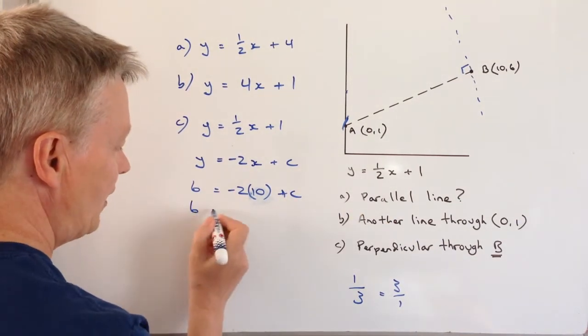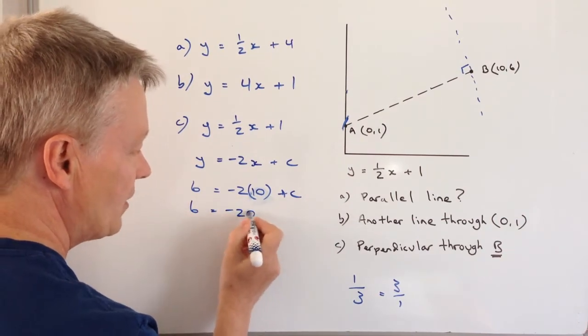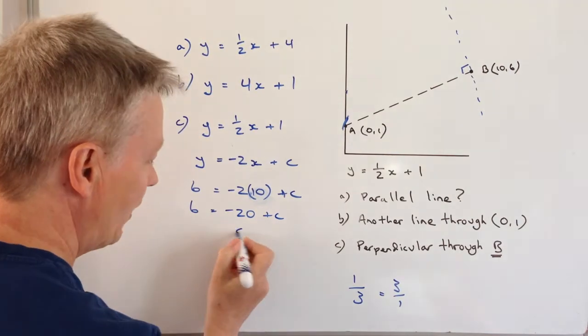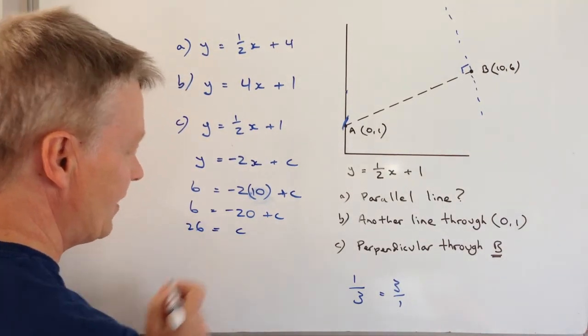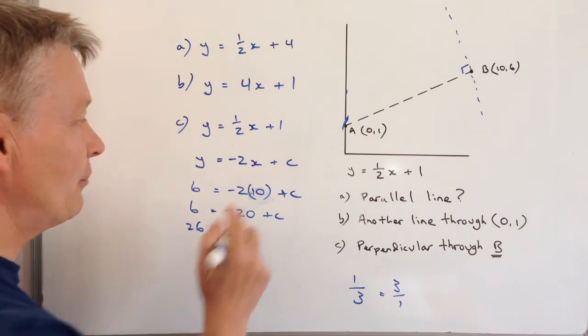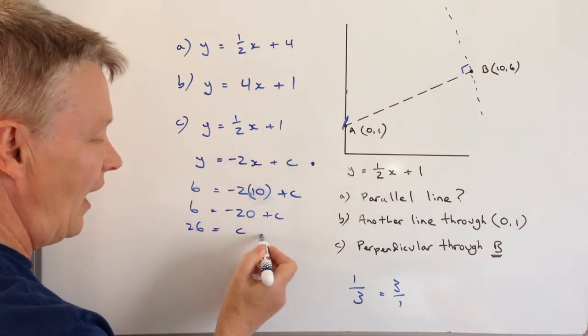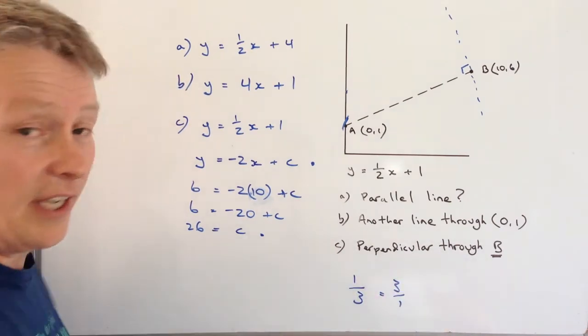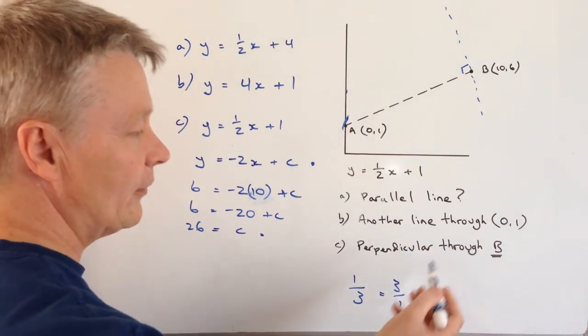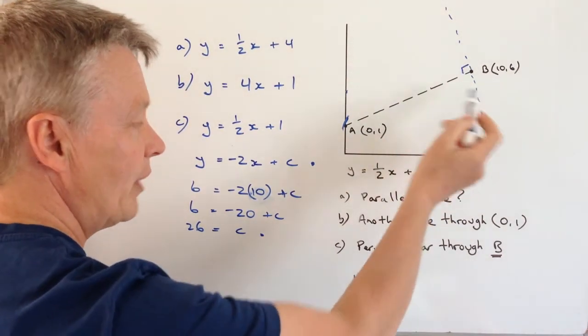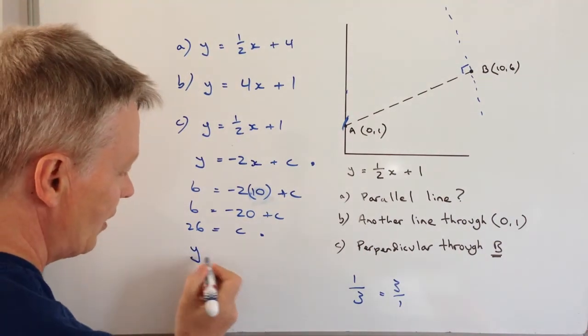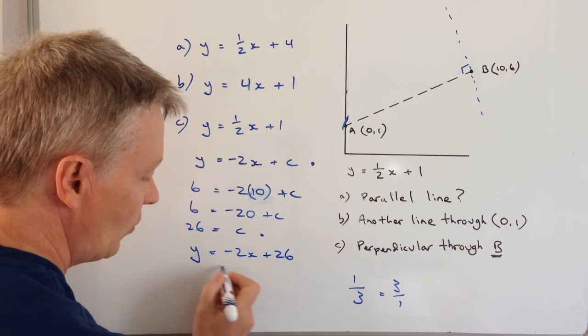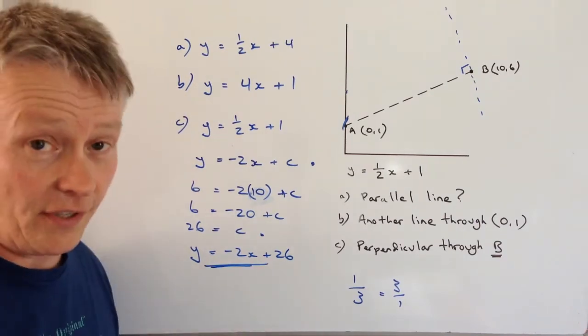So we've got 6 equals minus 20 plus c. If I add 20 to both sides I can work out the value of c is 26. So therefore if we stitch this together and put together this information in order to answer this question here, the perpendicular line that goes through b at that point, the equation is going to be y equals minus 2x plus 26. And that will answer that question.